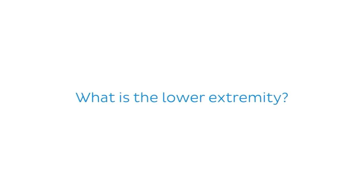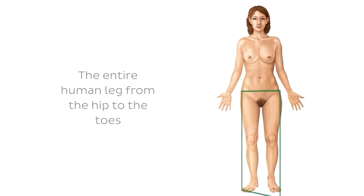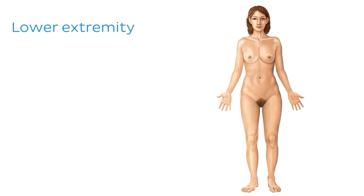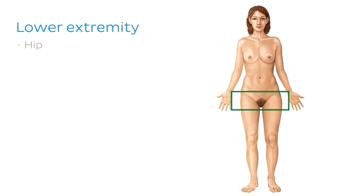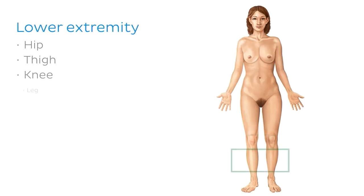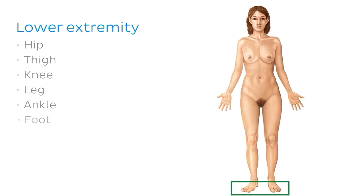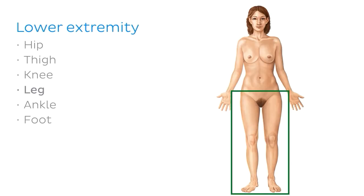The lower extremity is the entire human leg running from the hip to the toes, and it includes the hip, the thigh, the knee, the leg, the ankle, and the foot. Notice that while in everyday life we may use the term 'leg' to refer to the whole lower extremity, in anatomy the same term applies only to the region between the knee and the ankle.